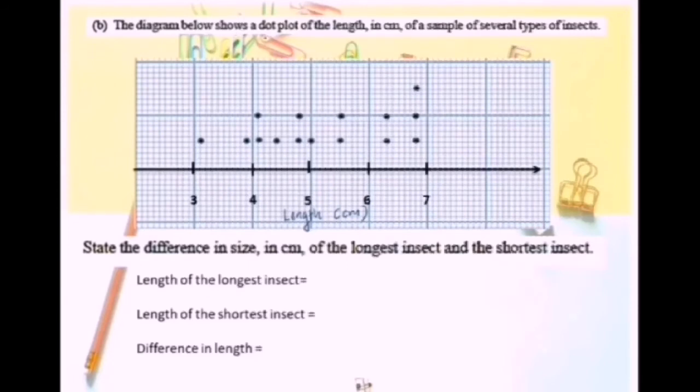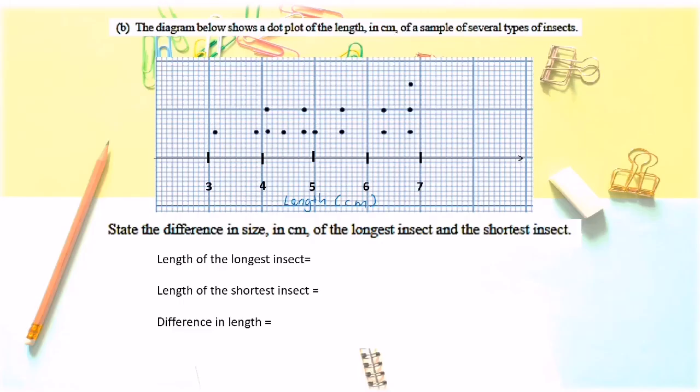The diagram below shows a dot plot of the length in centimeter of a sample of several types of insects. So the length of the longest insect is here, 6.8. So you write here, 6.8 centimeter. The length of the shortest insect is equal to 3.1 centimeter.